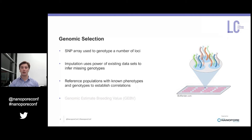Next we use a reference population with known phenotypes and genotypes to establish correlations between our desirable traits and genotypes. Finally we use best linear unbiased prediction to calculate genomic estimated breeding values, which are a value that links a genotype to a desirable trait.